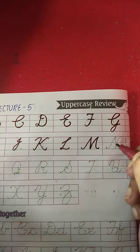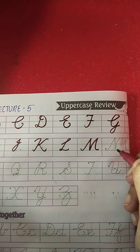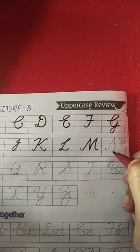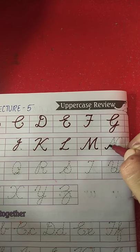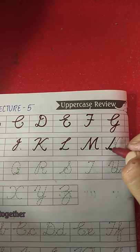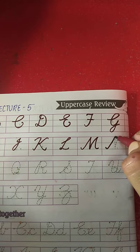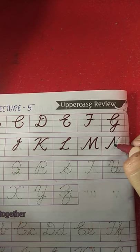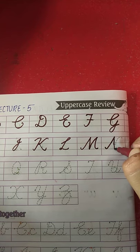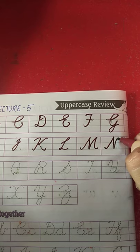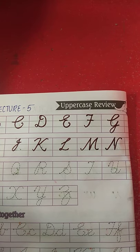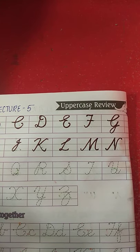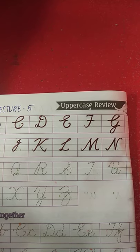M for monkey ke baad kaunsa letter aata hai? N — N for nest. Now put your pencil on the dot and draw a slanting line from the blue line to the red line, one more slanting line from the red line to the second blue line, and go upward from the blue line to the red line. This is letter N — N for nest. What is the spelling of nest? N-E-S-T. Nest.